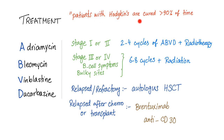Patients with Hodgkin's are cured more than 90% of the time, which is great. Treatment of Hodgkin's involves radiation and chemotherapy, depending on the stage.